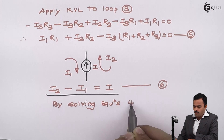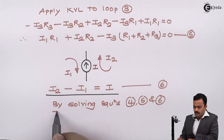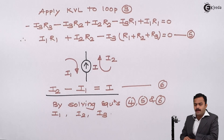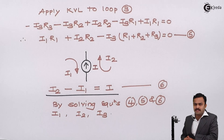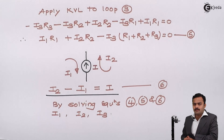By solving Equations 4, 5, and 6, I can get the values of I1, I2, and I3. From these loop currents, any branch current in the circuit can be found. Here we have seen a most important concept — the modification to mesh analysis whenever a current source is present between two loops, and how to solve that particular network. In subsequent videos, we will solve numericals based on this.